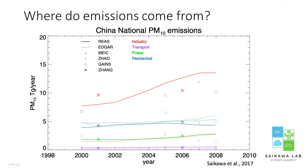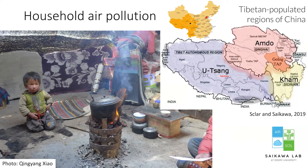What I'm showing is different emissions estimates — different inventories for China's emissions at different levels. The red is industry, different symbols show different emissions estimates, and different colors are for different sectors. I found it interesting that the residential sector emissions were fairly big — the blue, coming in the middle after industry. I asked why that would be, and that led to our work on Tibet.